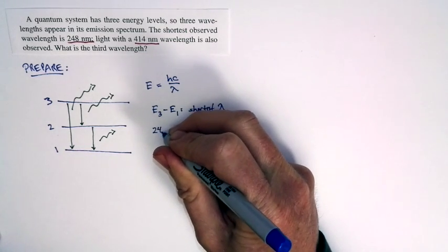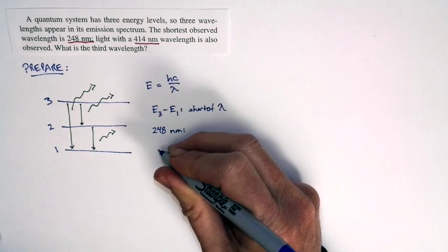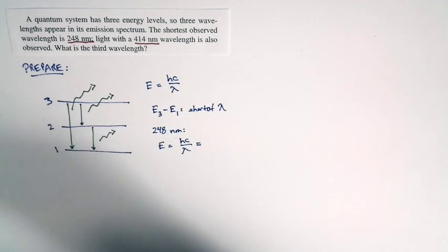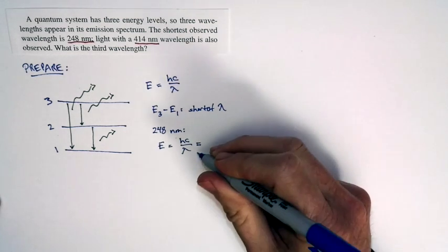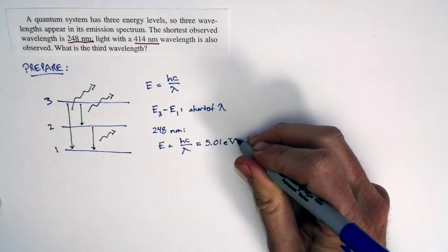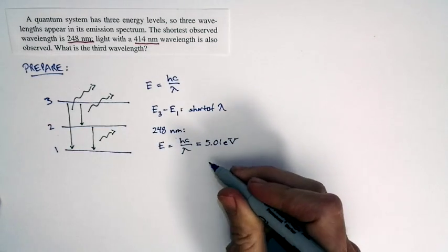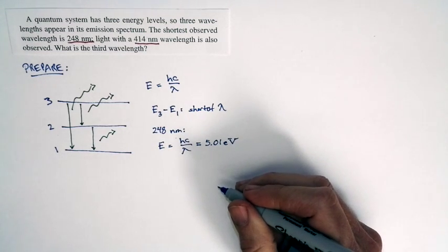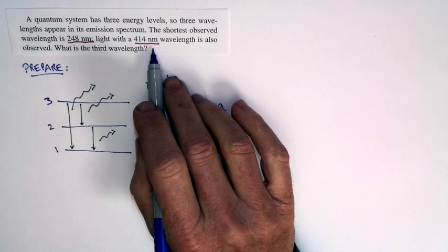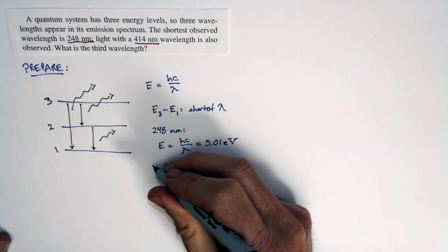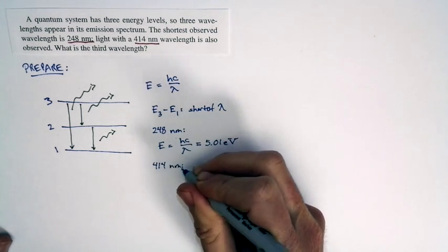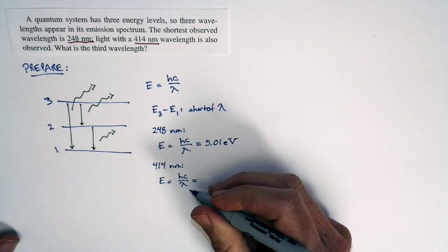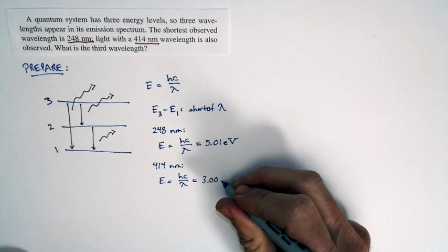248 nanometers — we can convert that to an energy using E = hC/λ. The energy of this photon is Planck's constant times the speed of light divided by the wavelength, and working that out gives 5.01 electron volts. This is a three significant figure problem. That's the energy corresponding to the transition from state three to state one. Now let's calculate the energy corresponding to the 414 nanometer photon — using the same calculation, hC/λ with a different wavelength — giving an energy of 3.00 electron volts.